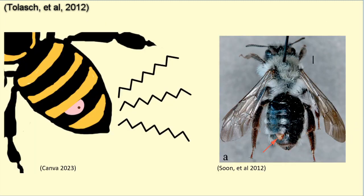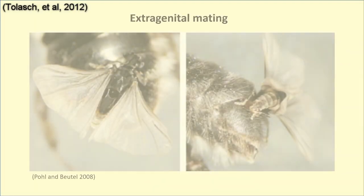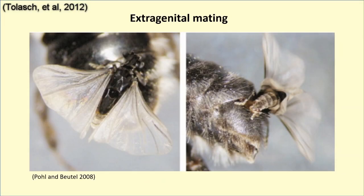The females produce a sex pheromone which the males can pick up using their filamented antennae, which leads the males directly to the exposed cephalothorax of the female, allowing for extra-genital mating to occur.